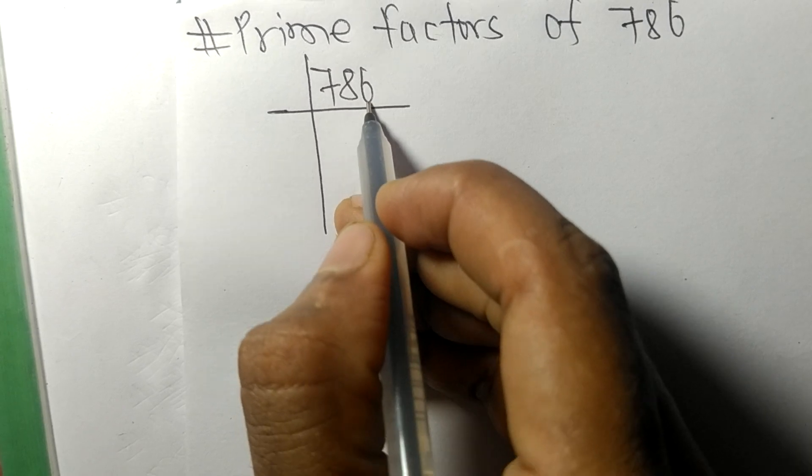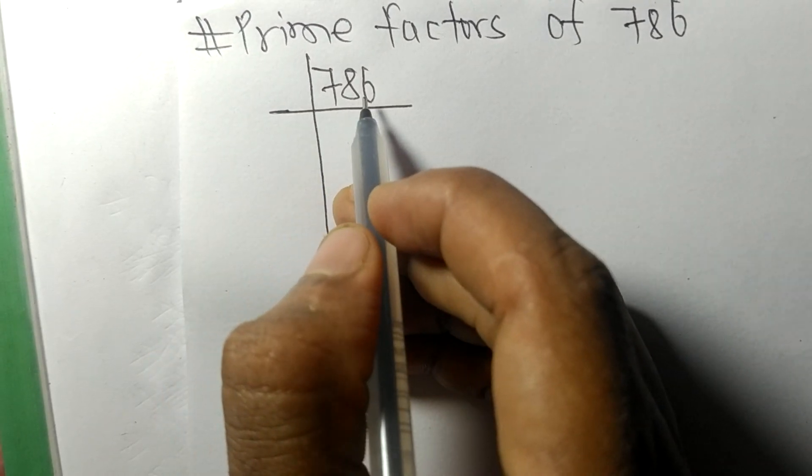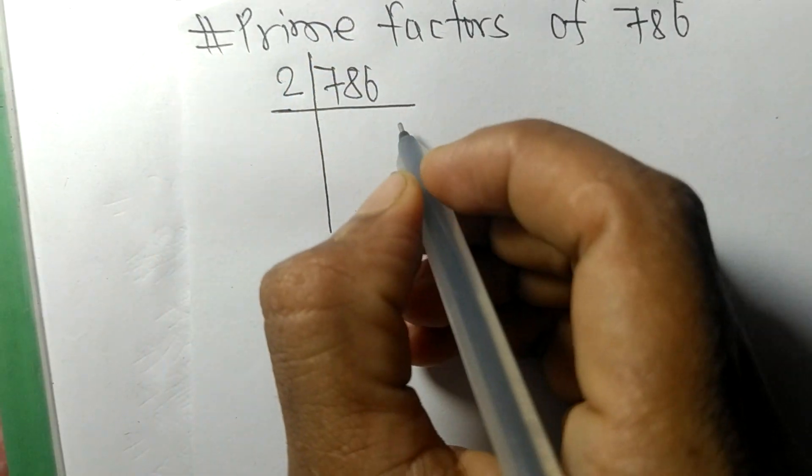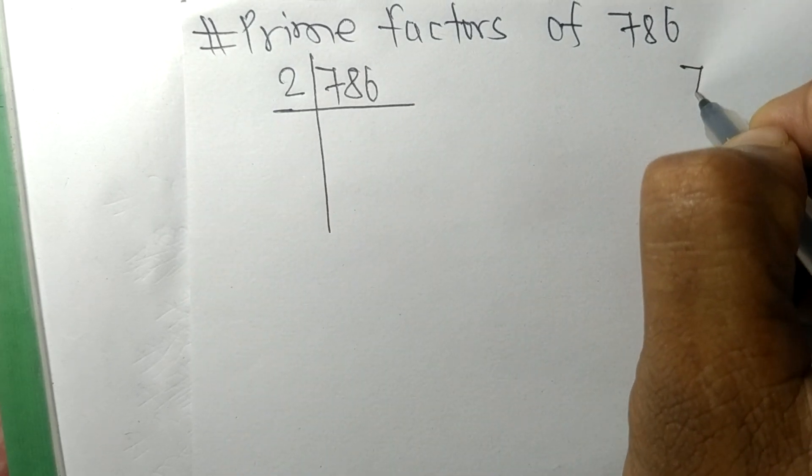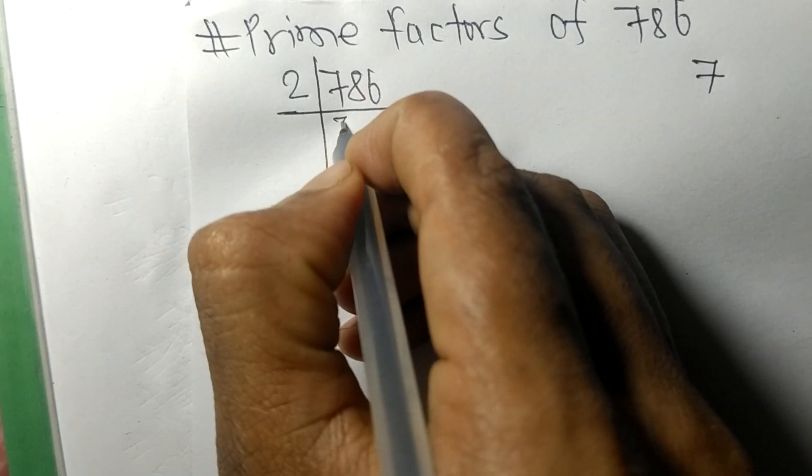It ends in 6, so this whole number is divisible by 2. First we have 7, so 2 times 3 means